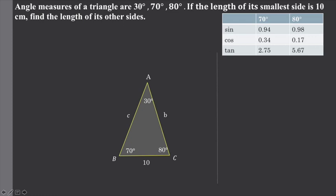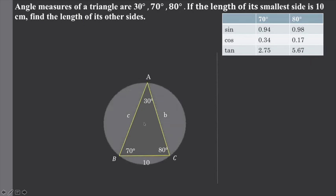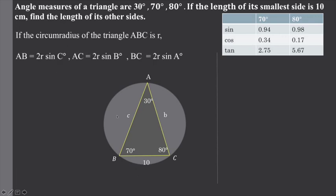In this triangle with vertices, we have a circumscribed circle. We are going to use the relationship between sides a, b, c and the circumradius R of the triangle.